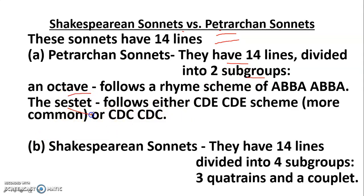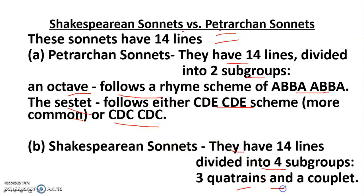The Petrarchan sonnet divides its 14 lines into two subgroups — an octave and a sestet. The octave follows the rhyme scheme ABBAABBA, and the sestet follows CDE CDE or CDC CDC. The Shakespearean sonnet also has 14 lines but divides them into four subgroups: three quatrains with rhyme scheme ABAB CDCD EFEF, and a couplet GG. Each line is typically 10 syllables in iambic pentameter.